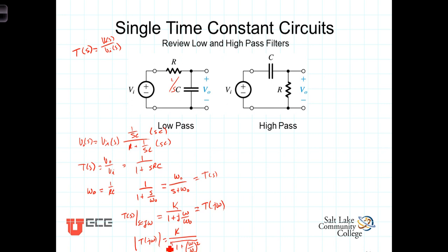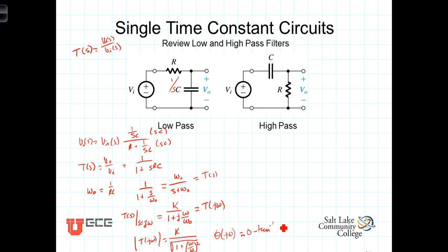The magnitude of the transfer function is found by taking the magnitude of the numerator, which is k, and dividing by the magnitude of the denominator, which is the square root of 1 squared plus omega over omega-0 squared. The phase of the frequency response function, theta of j omega, is equal to the phase of the numerator minus the phase of the denominator. The phase of the numerator is 0, so we get negative arctangent of omega over omega-0 divided by 1.